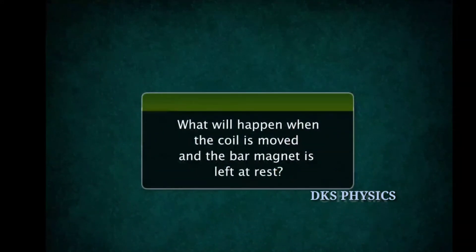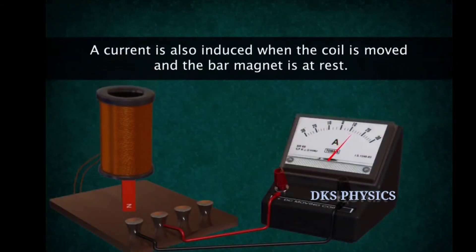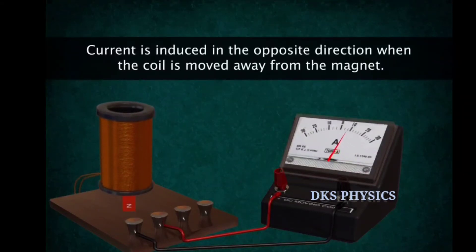What will happen when the coil is moved and the bar magnet is left at rest? Let's keep the bar magnet stationary at one point near Q and move the coil towards it. The needle deflects towards the right. When we move the coil away from the magnet, the deflection of needle is towards the left.